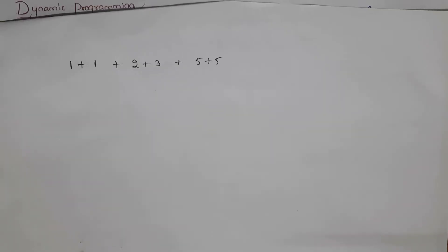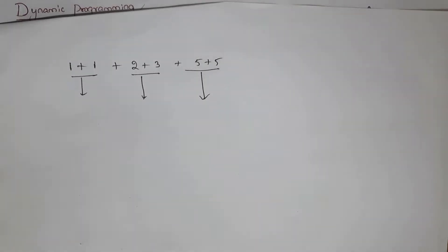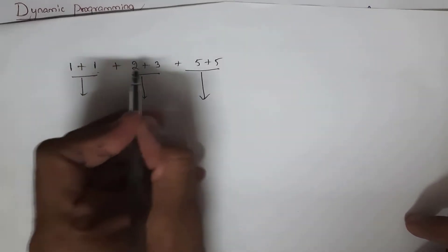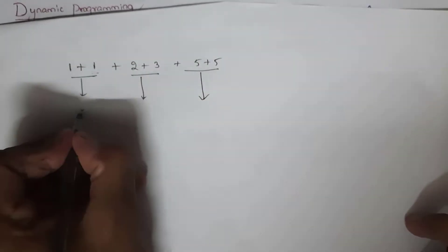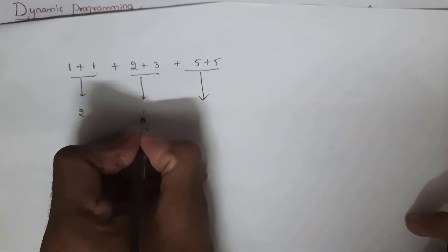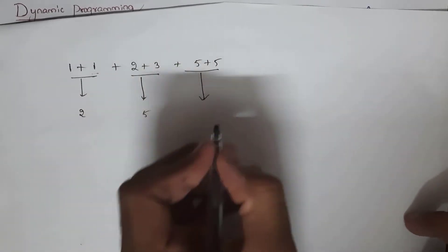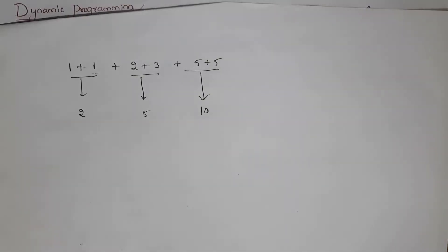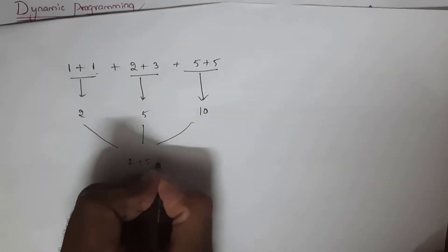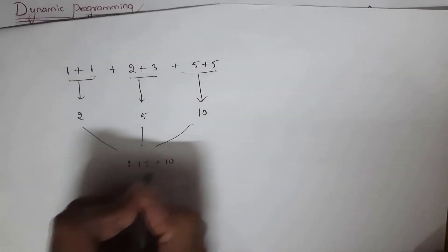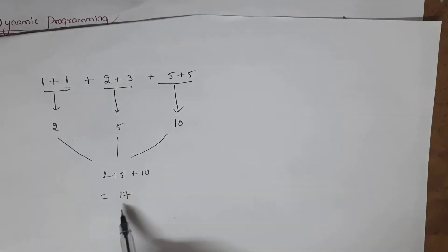This problem is divided into three sub-problems: 1+1, 2+3, and 5+5. First it calculates each result — the result is 2, then 5, and then 10. Now it will combine the solutions of the sub-problems: 2 plus 5 plus 10, that is 17. This is the solution to the largest problem.